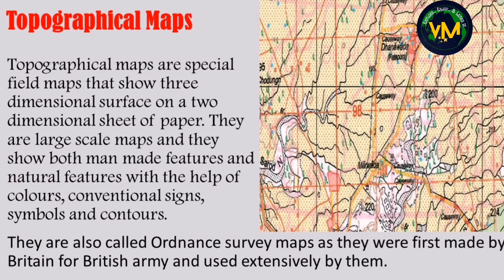In this video we are going to learn about topographical maps. Topographical maps are special field maps that show a three-dimensional surface on a two-dimensional sheet of paper. Paper has two dimensions — length and breadth — but in topographical maps we can see the third dimension, which is height, by using contour lines. These maps also show both natural features and man-made features with the help of colors, conventional signs, and symbols.